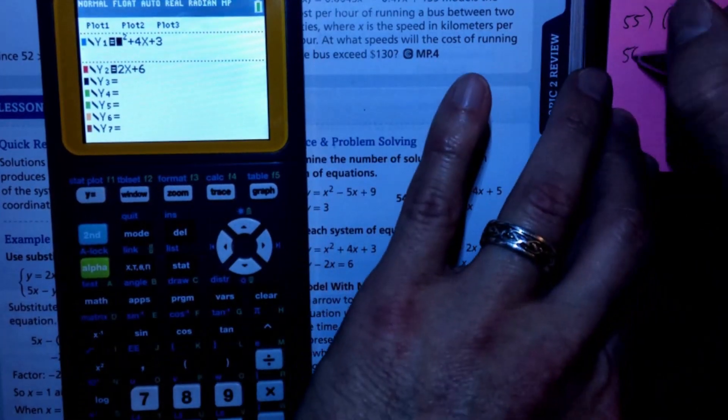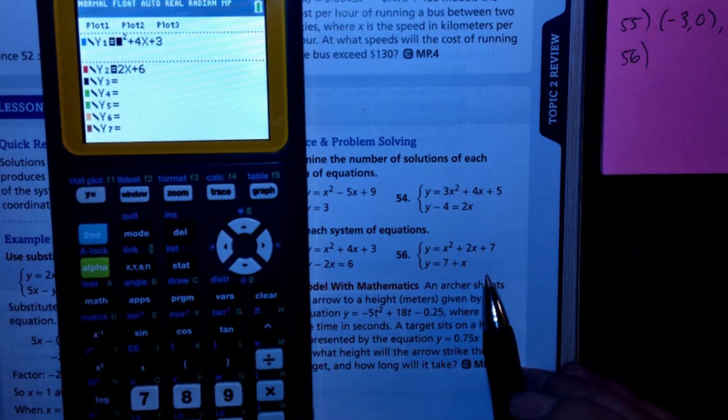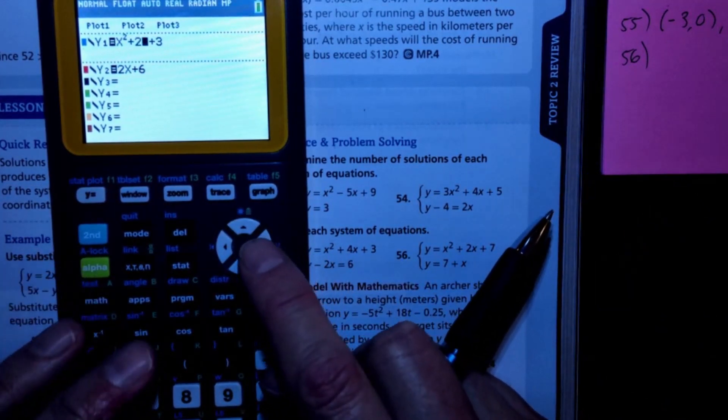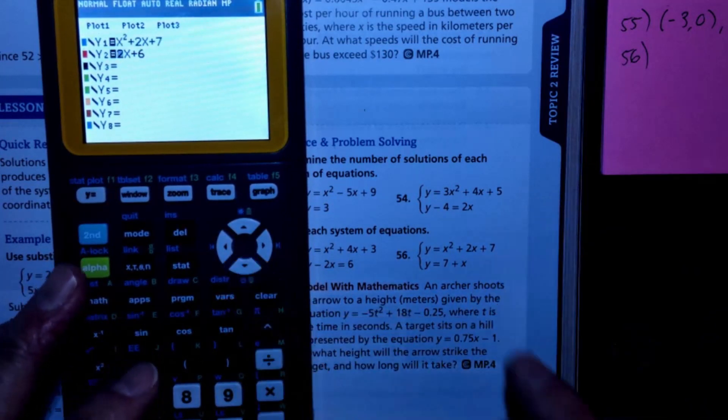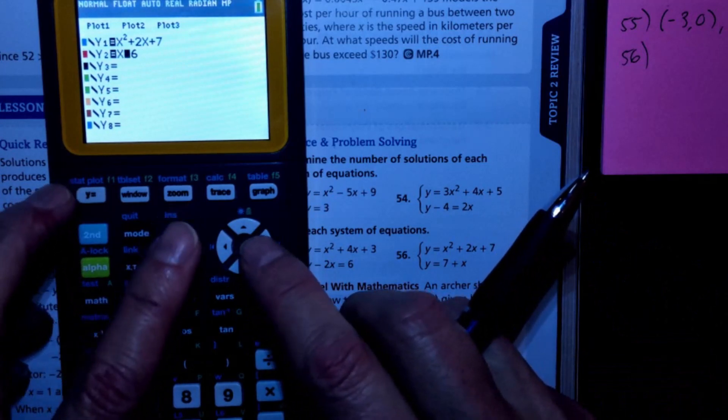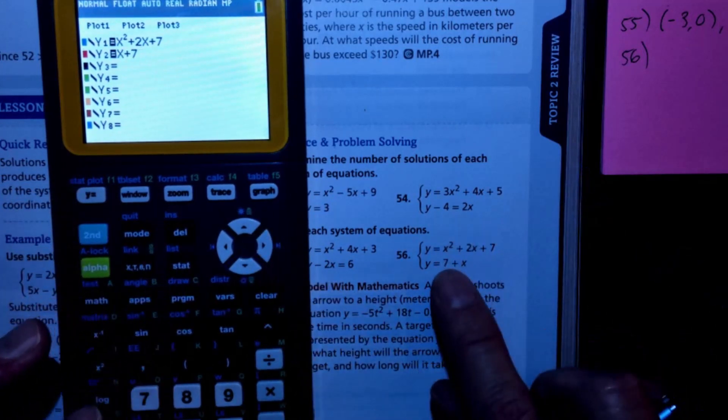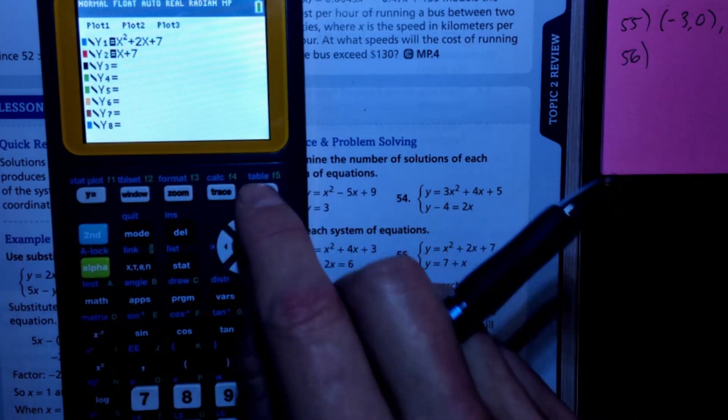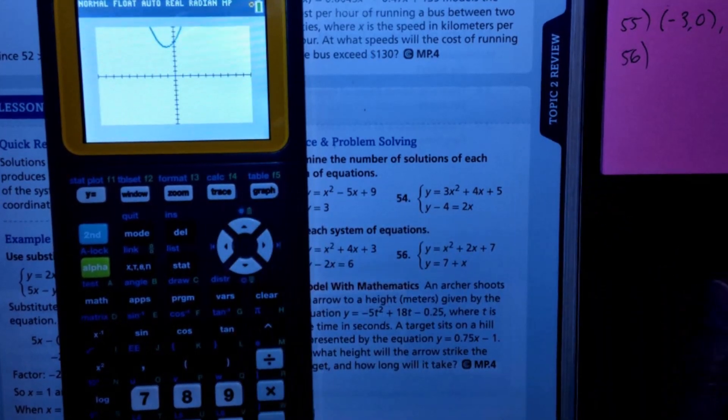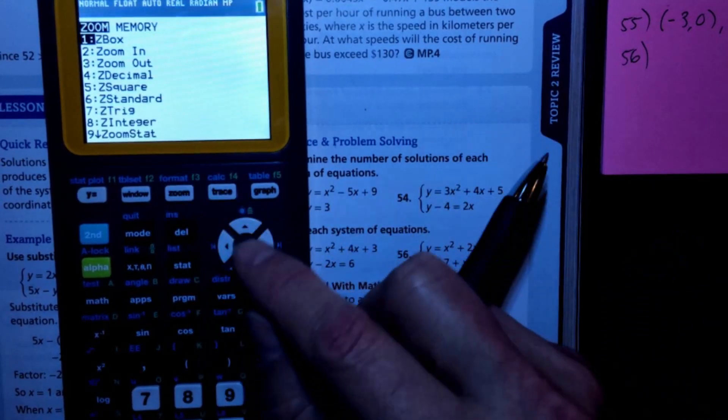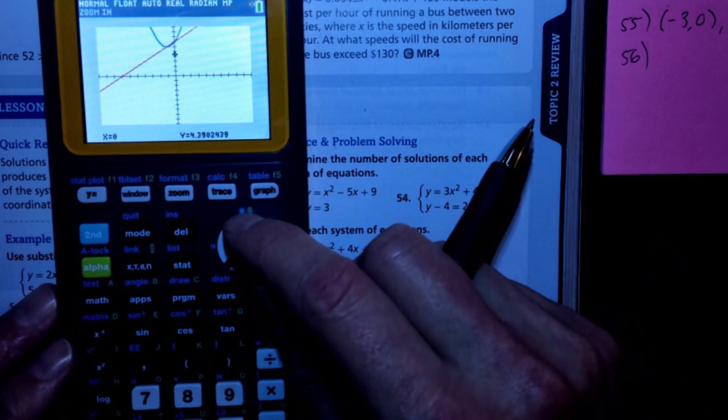All right, last one, 56. 56 has these two guys, so looks like I can just overwrite this as a 2x and that has a 7, and then this can just be x plus 7, so we'll delete that 2. This addition is commutative so I can switch the order there. And we'll do a graph zoom standard.